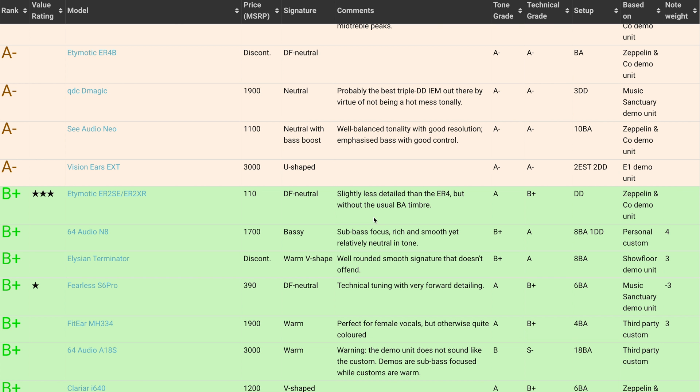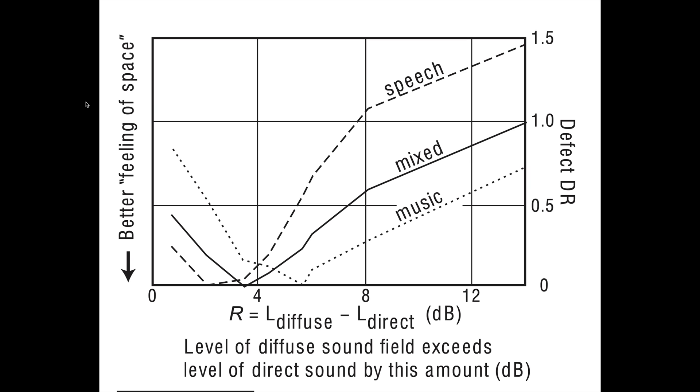And I'm sure even if the etymotic ER2SC got an S rank in the tone grade, clinical would find some excuse in the technical grade, slightly less detailed than the ER4. Like I mentioned earlier, such claims can only come from a lack of comprehension or manipulation. The subjective evaluation of a feeling of space can be measured by subtracting the level of direct sound from the level of diffuse sound.